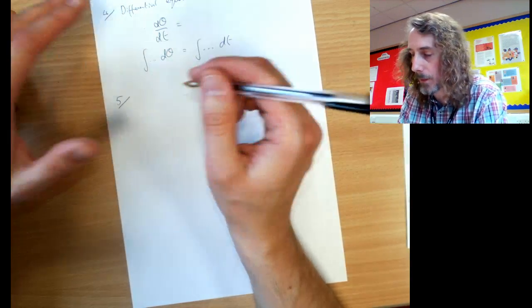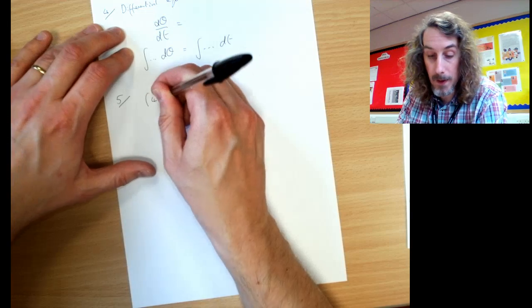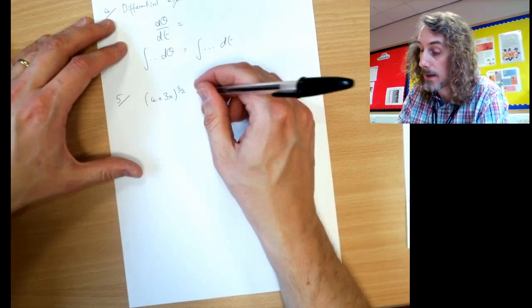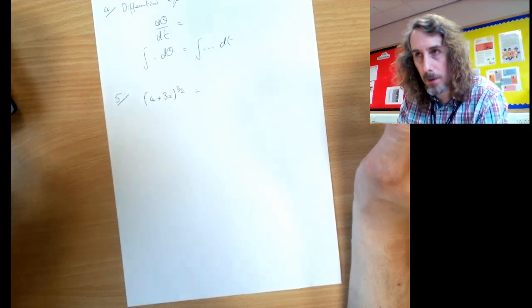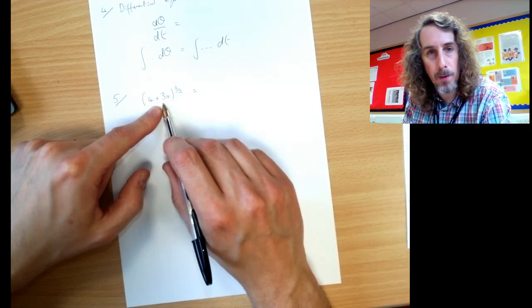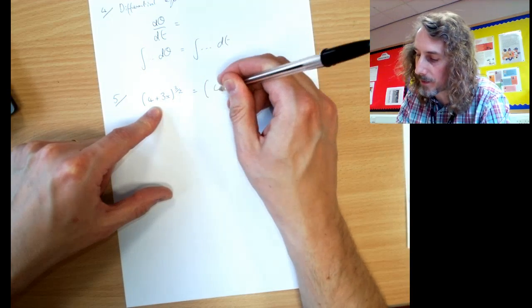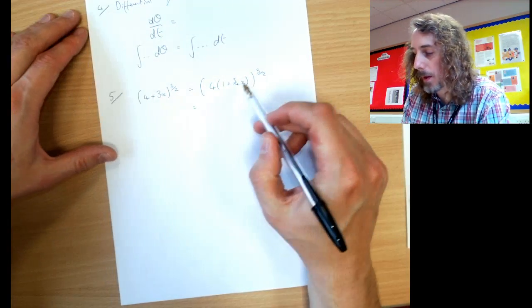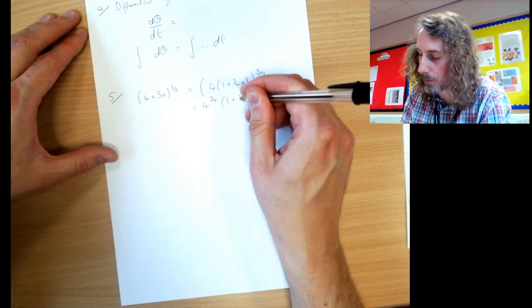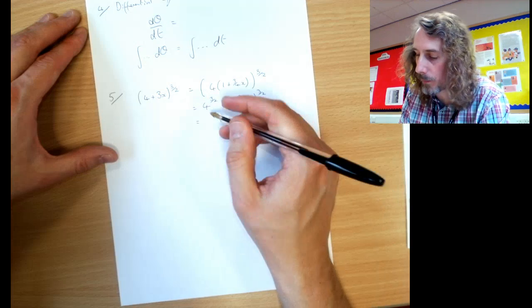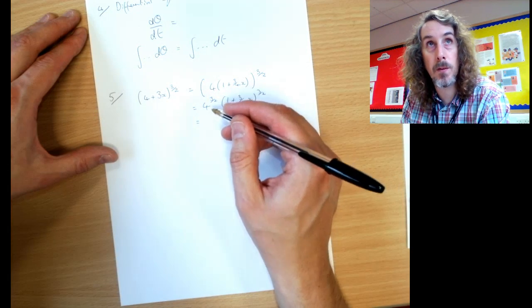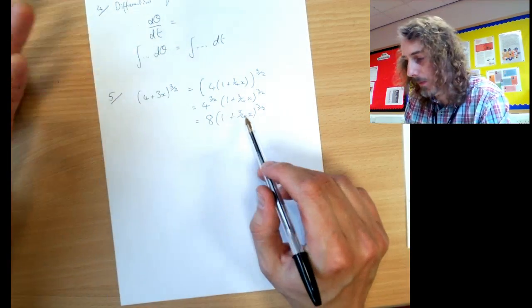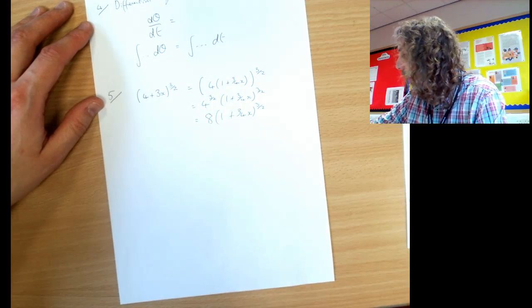Top tip number 5 is for the binomial theorem. In Core 2, you probably use the a plus b to the power of n formula. In Core 4, you have to use the 1 plus formula. For example, 4 plus 3x to the 3 over 2. We start by taking 4 out as a common factor. The 3 over 2 applies to everything in this bracket. So we've got 4 to the 3 over 2 and 1 plus 3 quarters of x to the 3 over 2. Four to the 3 over 2 is square root of 4 is 2, cubed is 8. Then we can do the 1 plus x stuff from the formula booklet.